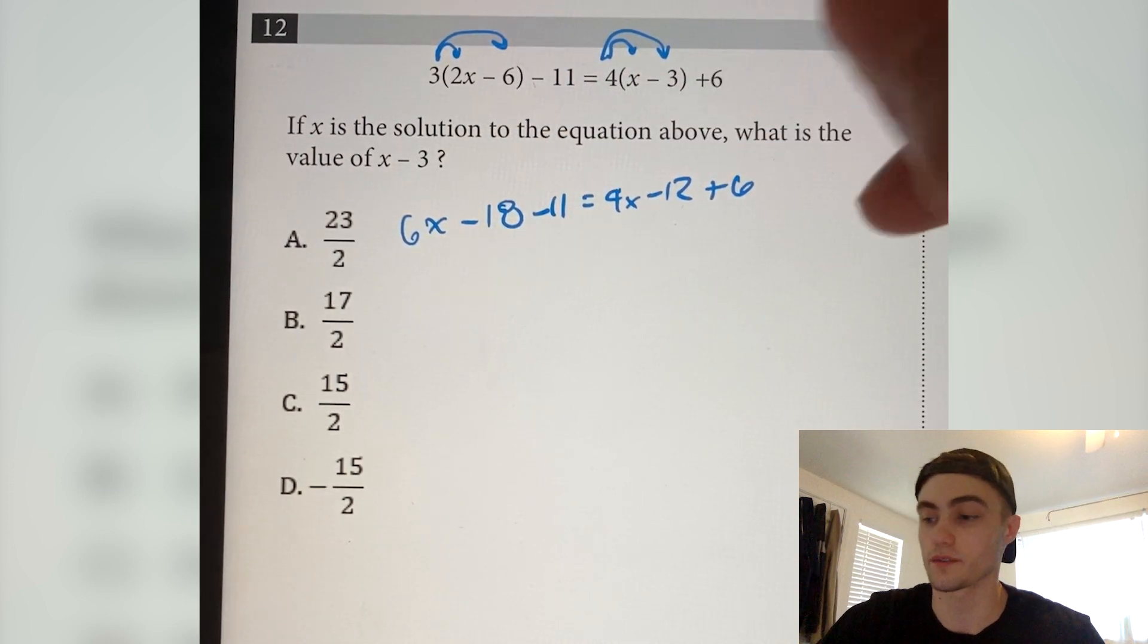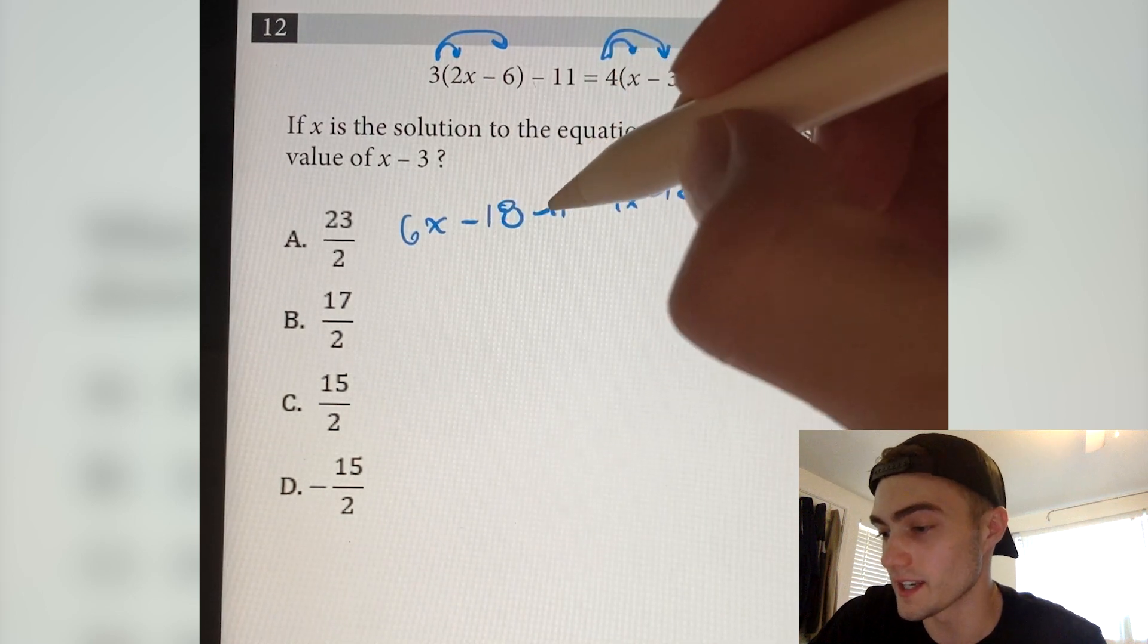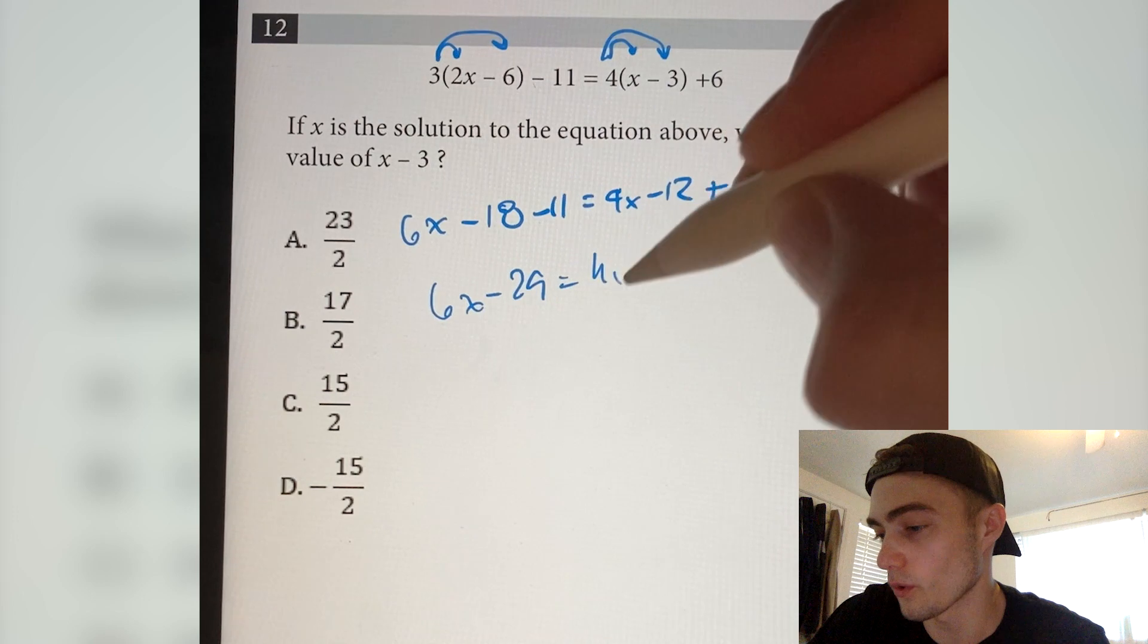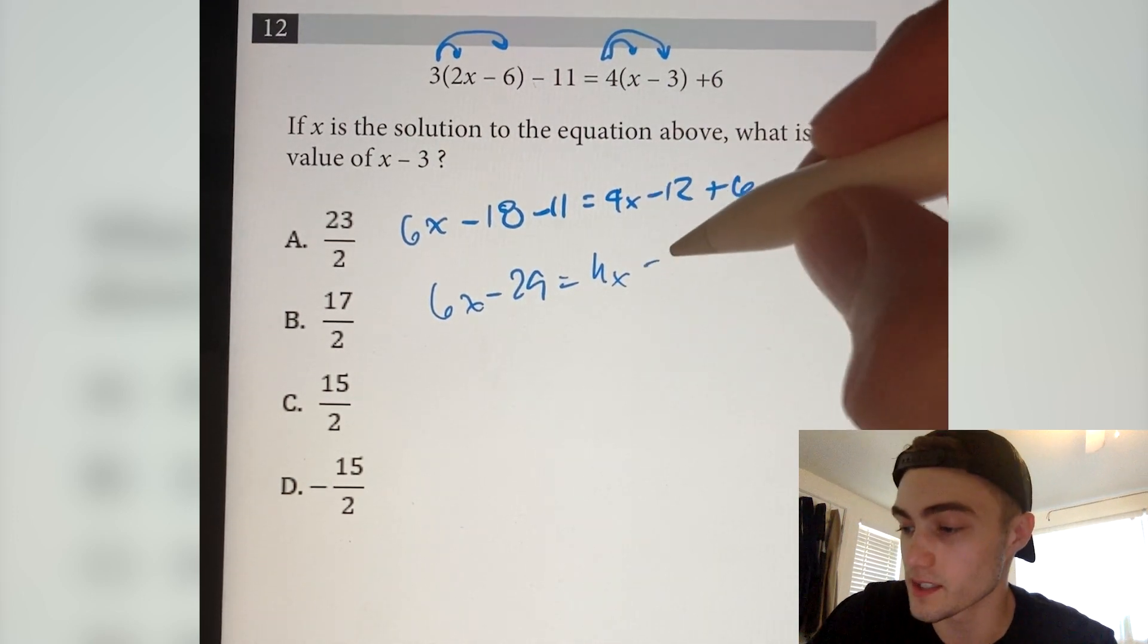Now I'm going to add up all the like terms. So we have a minus 18 and a minus 11, so that's minus 29, and that equals 4x minus 12 plus 6. That's just minus 6.